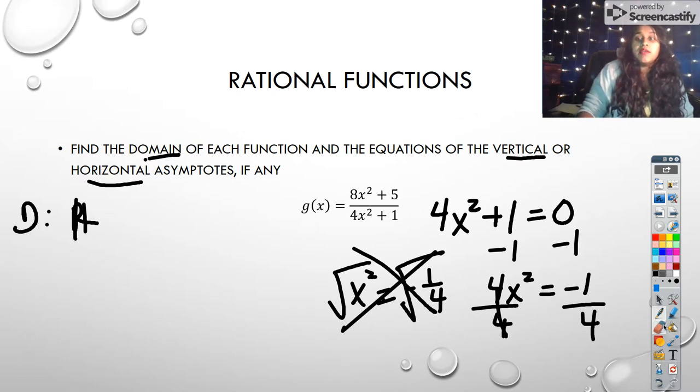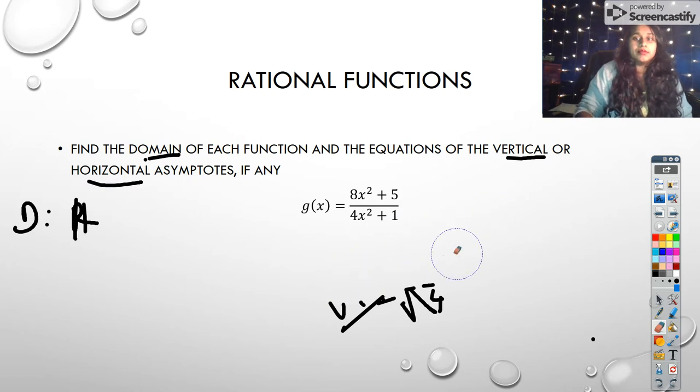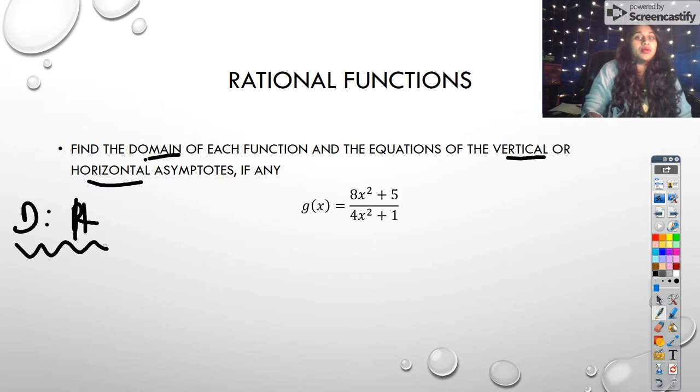So that tells me that there cannot be any issues in the domain. So that means it is genuinely all real numbers. There's nothing down here that's going to zero out the denominator. There's no value of x that can allow me to zero the denominator.